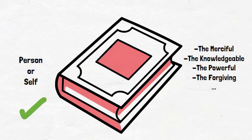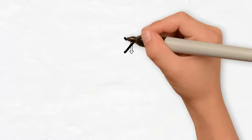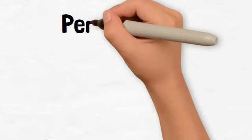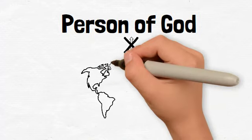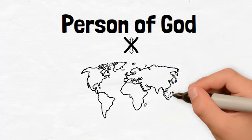Such as the Merciful, the Knowledgeable, the Powerful, the Forgiving, and so on. How so? It means that there isn't the slightest shred of similarity between the 'that' or person of God and that of any of His creation in any possible way.